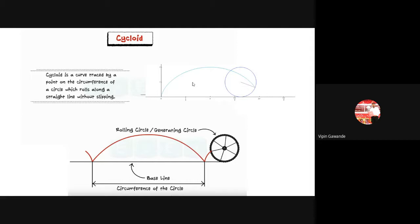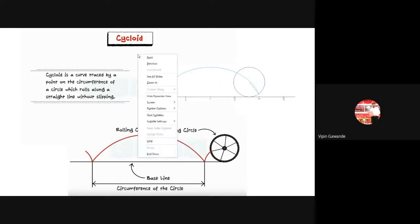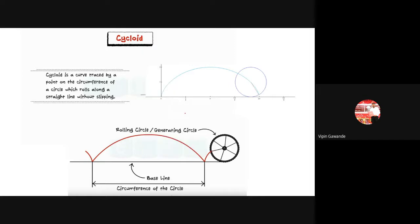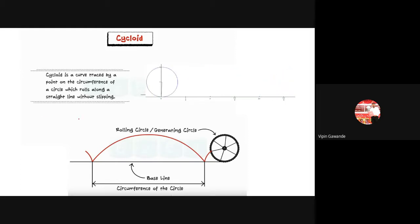Good morning students and welcome to another lecture for Engineering Graphics. In the last lecture we have seen the construction methods for ellipse, parabola, and hyperbola. We have seen two methods: the focus-directrix method and the rectangle method. The focus-directrix method is for the ellipse, parabola, and hyperbola, while the rectangle method is only for the ellipse and the parabola.